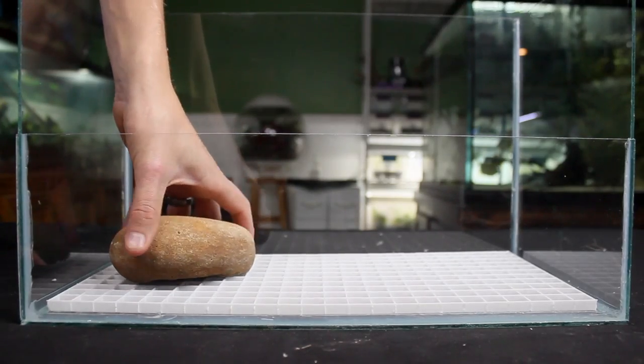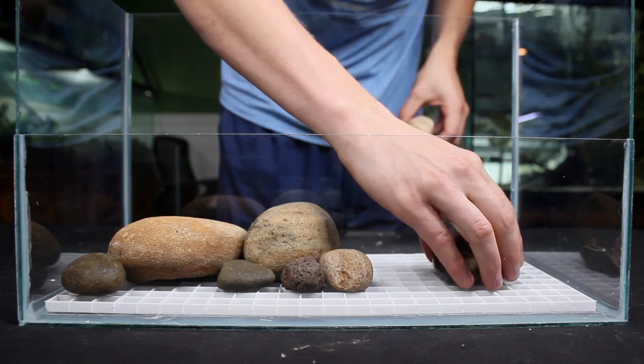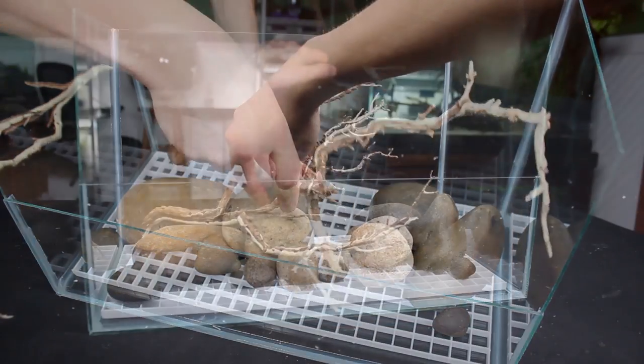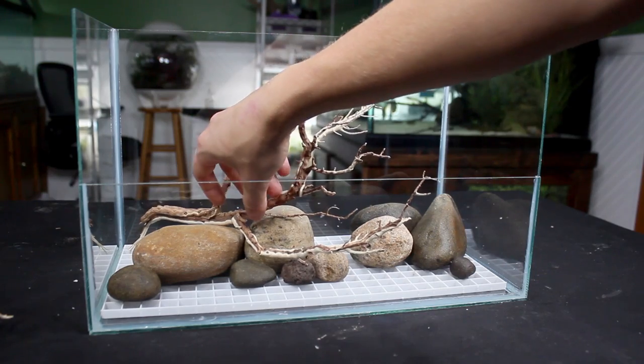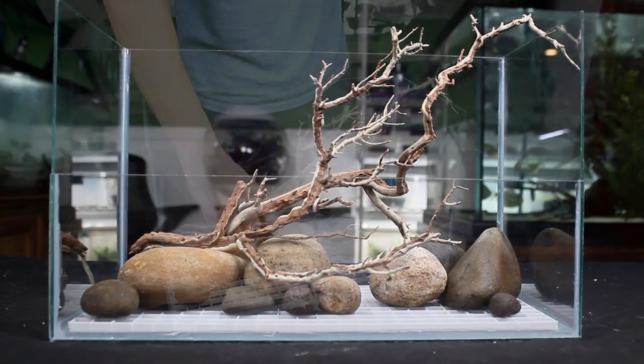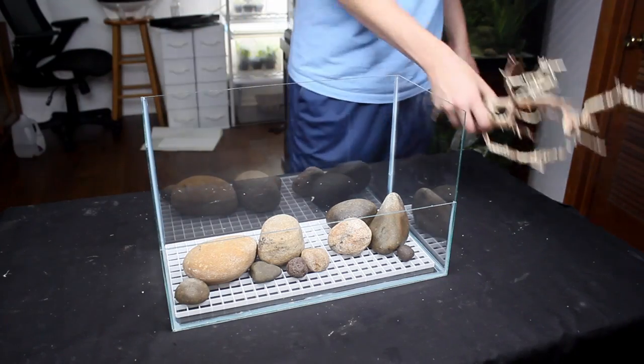At this point the tank is finally ready for the preliminary scape. Before adding any of the substrates I created a general layout that will give me a good starting point for the rest of the design. I took a picture on my phone for reference and removed everything.